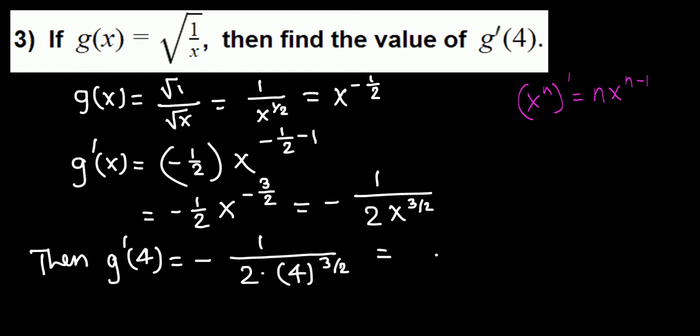That's negative 1 over 2 times what is 4 raised to 3/2. You can use your calculator and evaluate 4 raised to 3/2, which gives 8. Or it can be evaluated like this: 4 is 2 squared, and with the 3/2 exponent, we get 2 cubed, which is 8.